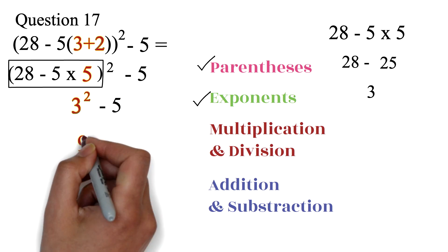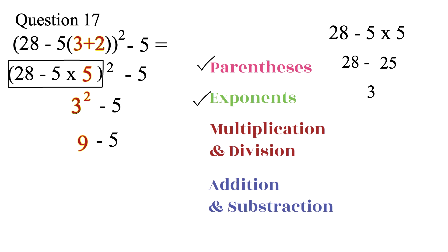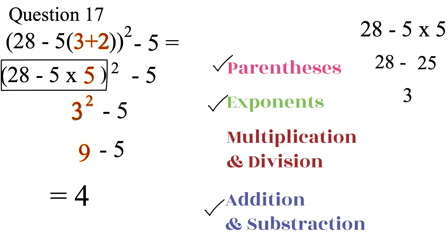We have 9 minus 5. Finally, we'll do the subtraction. 9 minus 5 is 4. So, we have 4 as our final answer.